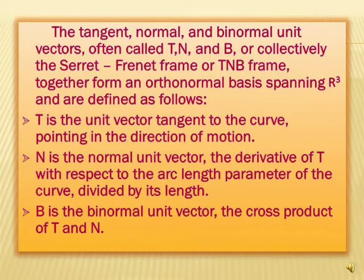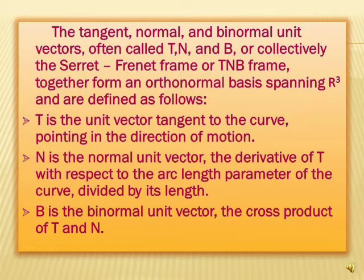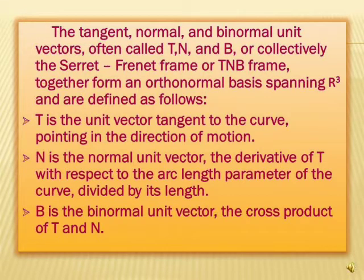T is the unit vector tangent to the curve pointing in the direction of motion. N is the normal unit vector, the derivative of t with respect to the arc length parameter of the curve divided by its length. B is the binormal unit vector, the cross product of t and n, denoted as b = t cross n.